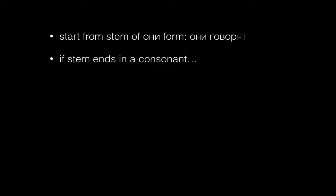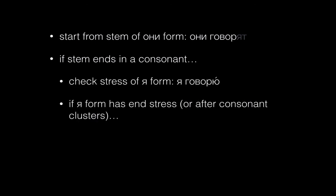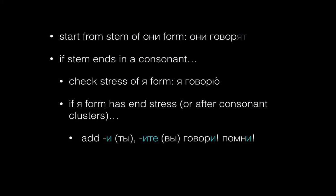Summing up: as before, to make a command, we start with the stem of the они form. If that stem ends in a consonant letter, then we need to check the stress of the Я form. If the Я form is stressed on the ending, then we add И, or ите, to the stem of the они form for the command. Remember that we're just checking the stress of the Я form — it doesn't matter if the stem of the Я form is different, since we're always just working from the stem of the они form.